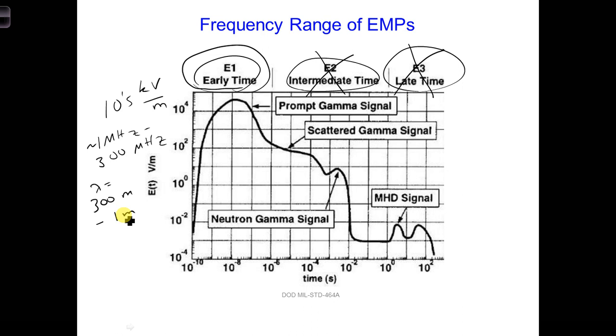Now we know the frequency content of the EMP we're interested in. Now spatially, what is the shape of the EMP once it reaches the airplane?